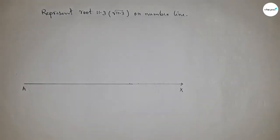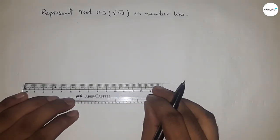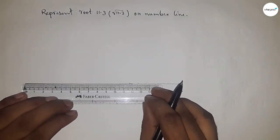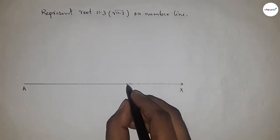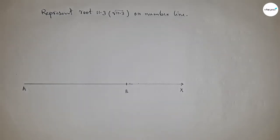Next, taking 11.3 centimeter length by using scale. So this is 11.3 centimeter and this is B point. So AB equals 11.3 centimeter.